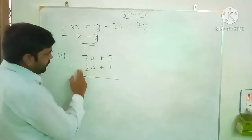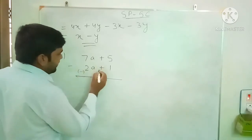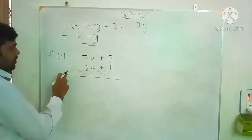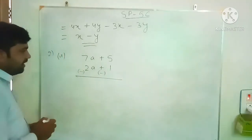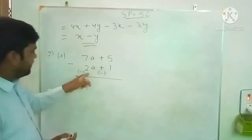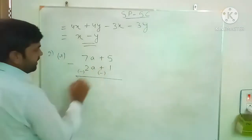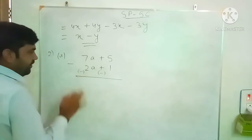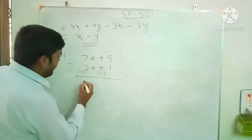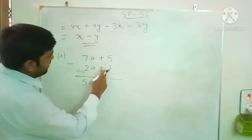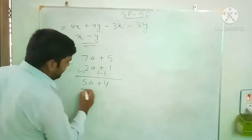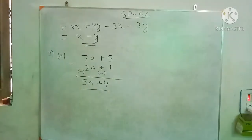The sign of plus 2a changes to minus, and the sign of plus 1 also changes to minus. When subtracting the lower expression, we change the sign of each term. Now consider only the new signs written in the bracket. 7a minus 2a gives 5a, and plus 5 minus 1 gives plus 4. So the answer is 5a plus 4.